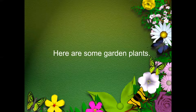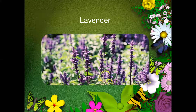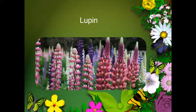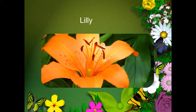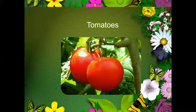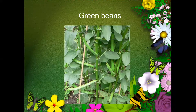Now let's have a look at some garden plants. See if you can recognize any of these and name them. Do you recognize this one? This is called lavender. This is called a tulip. This is a lily. Do you recognize this plant? That's a rose. Well done. Tomatoes — fantastic! And here are some green beans. Well done.